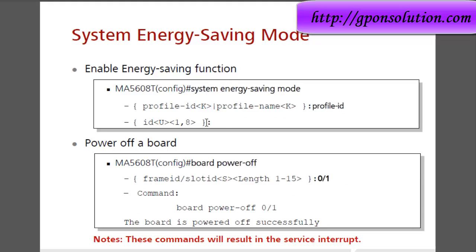System energy saving mode: use 'energy saving mode enable' to enable the energy saving function, then save with the energy saving mode file ID. To power on a specific board, use the command 'board power-on 0/1'. By this command we power up a specific board.